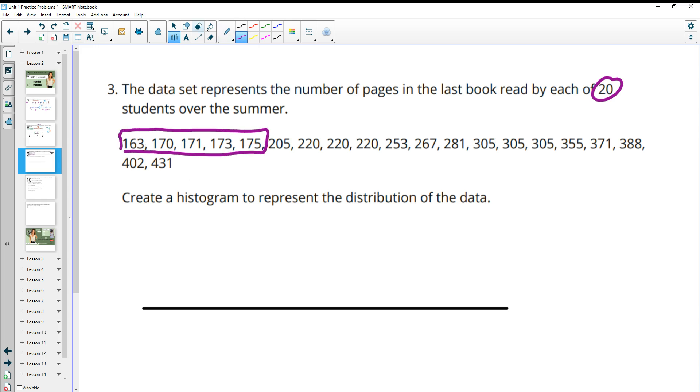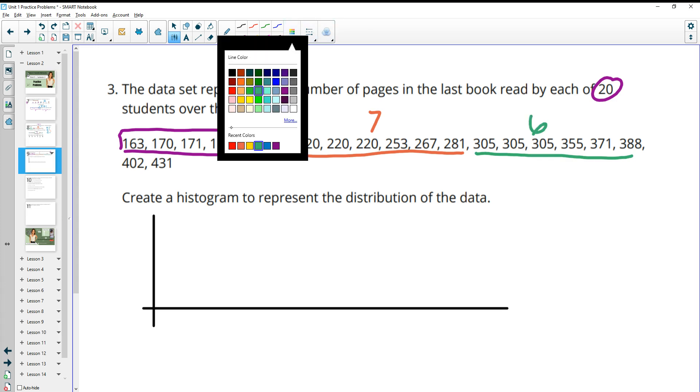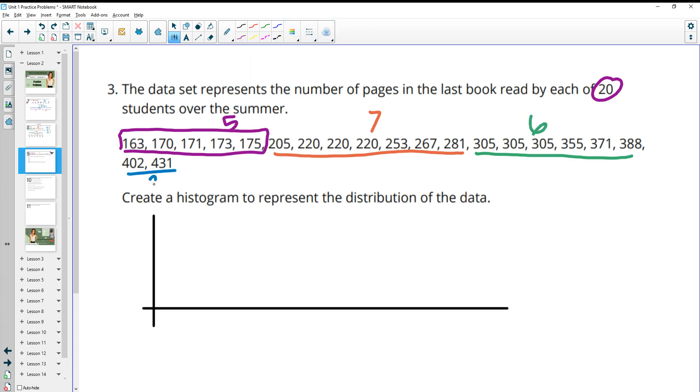So that's going to give me, and I'm just going to count it up so I know my vertical measure here. So in the hundreds I have 1, 2, 3, 4, 5, five people that read in the hundreds. For the 200s I have 1, 2, 3, 4, 5, 6, 7 people. 300s I have 1, 2, 3, 4, 5, 6 people. And then the 400s I have two people.